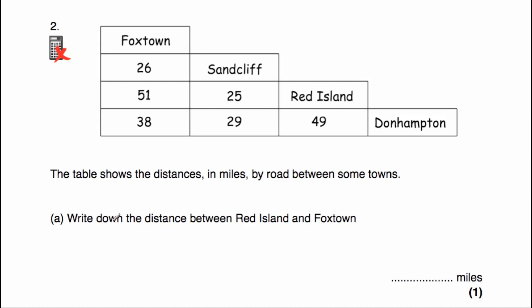Part A says write down the distance between Red Island and Foxtown. If we come down from Foxtown and across from Red Island, you can see here it's going to be 51 miles. So the answer is 51 miles.